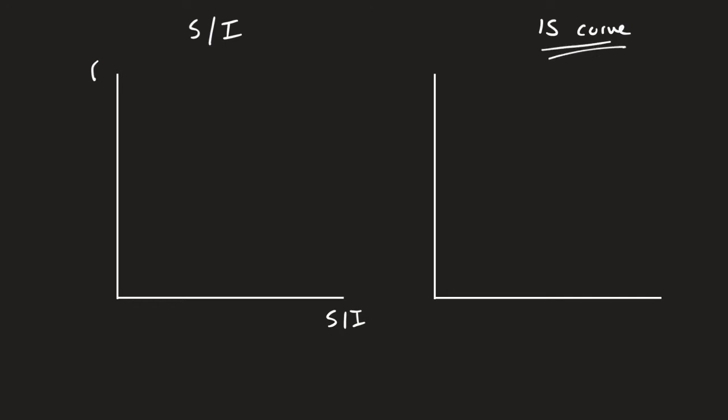The IS curve wants to know how the real interest rate and output are related. By definition, the IS curve tells us all of the real interest rate points that put the goods market in equilibrium for whatever level of output there is. It tells us: for any level of output, what real interest rate will put the goods market in equilibrium? That's why we use the savings and investment diagram to show that.